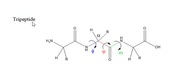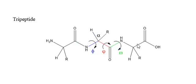Here I have taken a tripeptide as an example. We know that a tripeptide is made with three amino acid residues, as you can see here. R indicates the side chain of the particular amino acid residue, and we know that the bond between C=O and NH is the peptide bond.